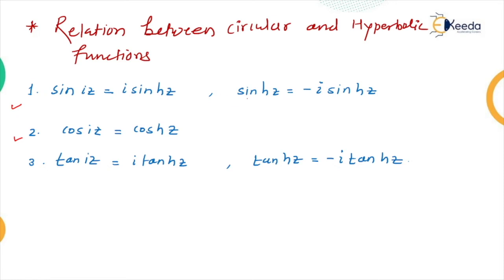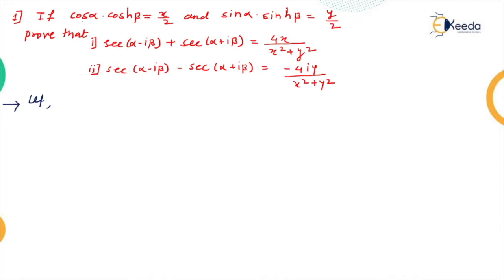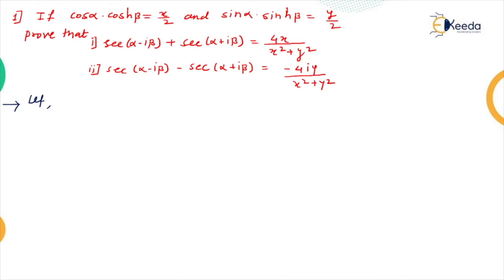Using these relations we can solve hyperbolic function problems. The first problem is: if cos α · cosh β = x/2 and sin α · sinh β = y/2, then prove that sec(α − iβ) + sec(α + iβ) = 4x/(x² + y²), and sec(α − iβ) − sec(α + iβ) = −4iy/(x² + y²).